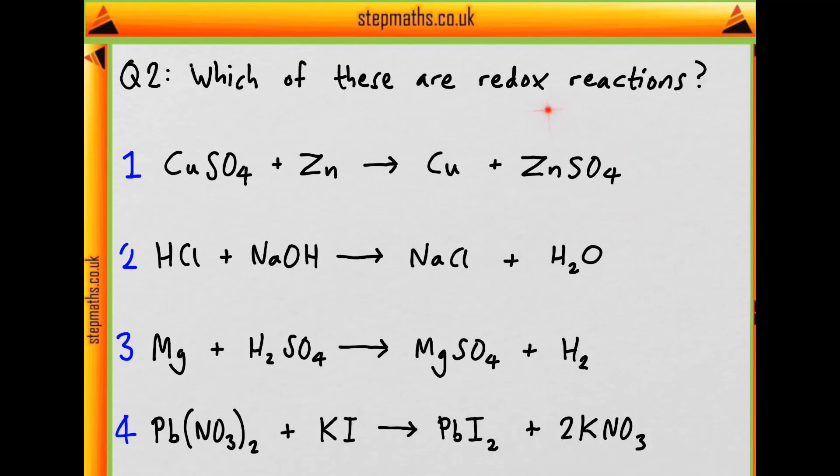So firstly, what is a redox reaction? It's a reaction where something is reduced while something else is oxidised. And so which of these are redox? And how do we work it out? We're going to need to look at the oxidation states of each element in these and see if they change throughout the reaction.